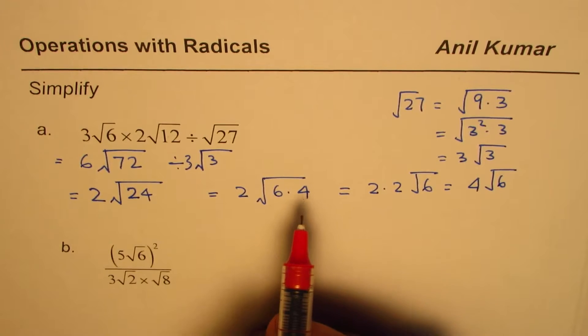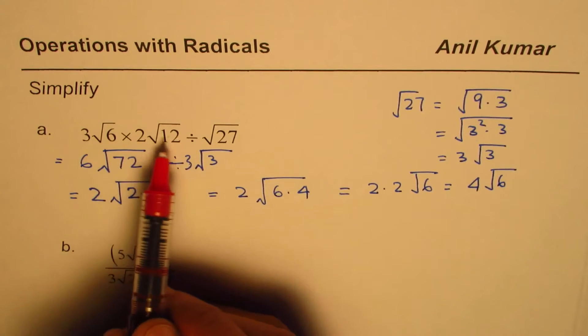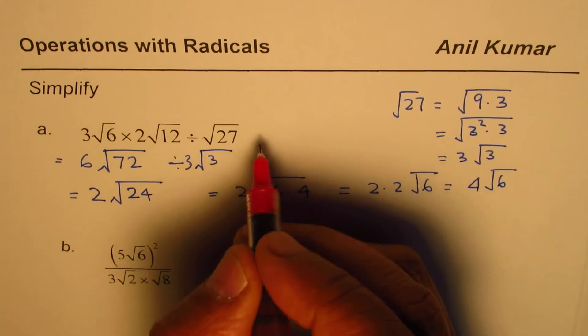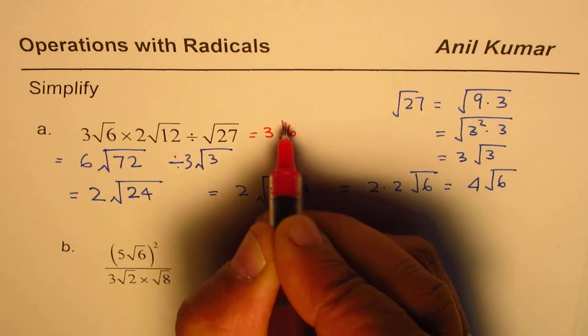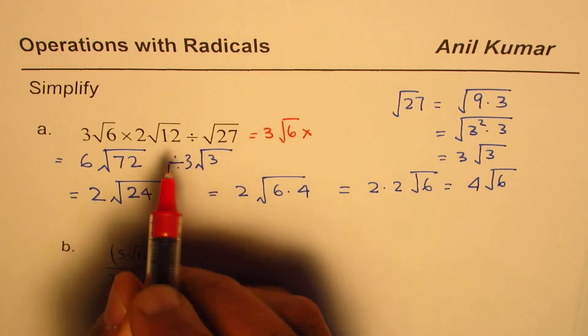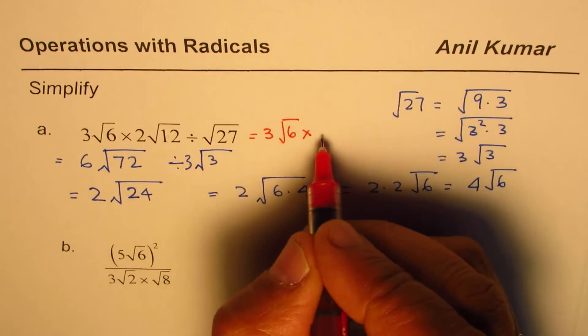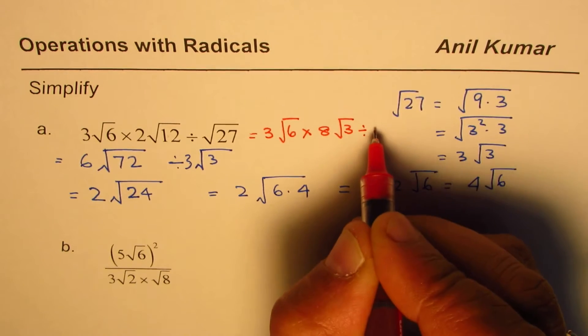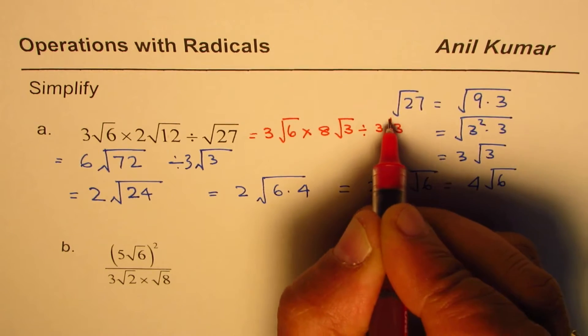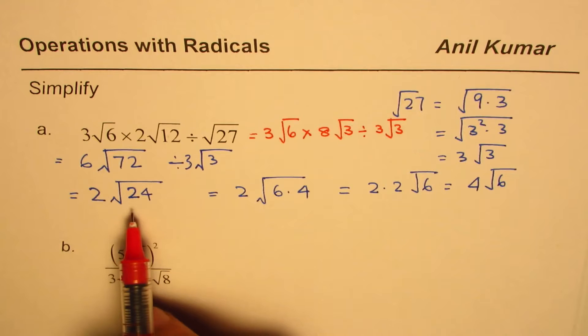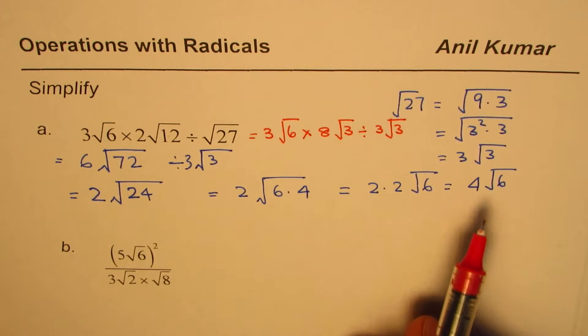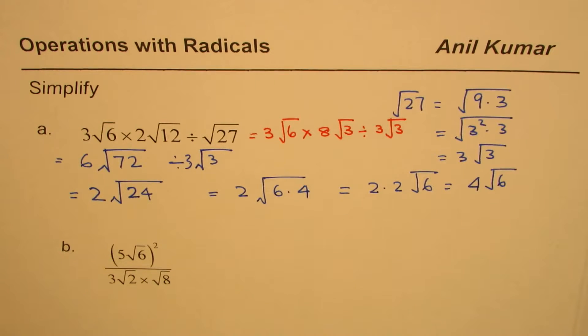The other method, which I think is a better method, is to simplify in simpler forms. So the question could have been written as 3√6 times 12 is 4 times 3, so it is 8√3 divided by 3√3. And then you could do the operations to get the result. Both will give you the same solution.